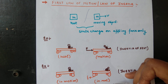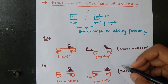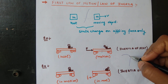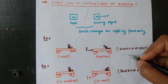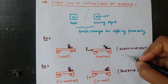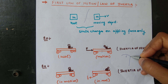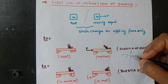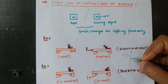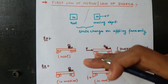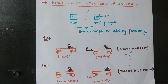One more example related to inertia of direction: if a person is riding a motorcycle and suddenly encounters a sharp turn, due to inertia of direction the body tends to continue in the straight direction — so the body leans or tilts outward at the turn. This is the First Law of Motion. Read it from the book and tell me your queries.